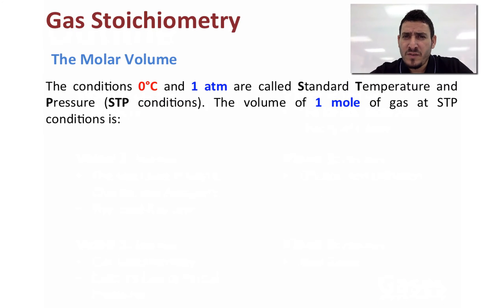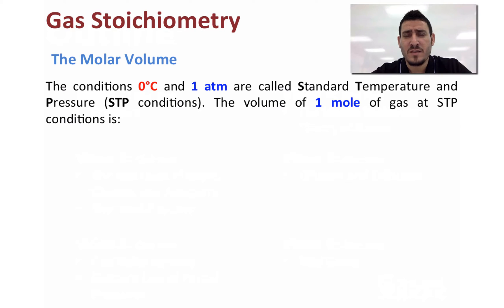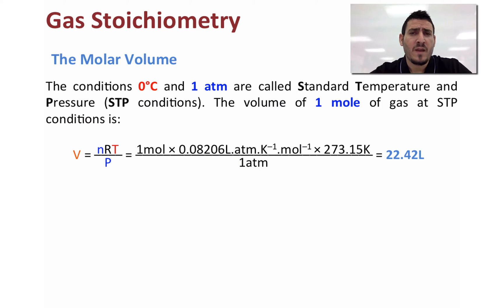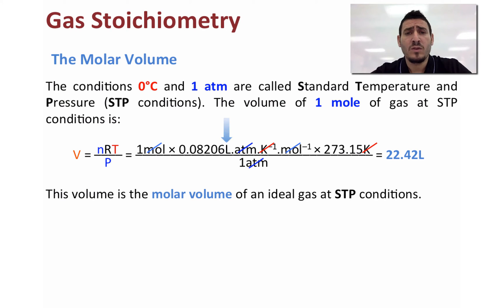In a previous video I discussed the ideal gas law. Using this law we can calculate the molar volume at standard conditions of temperature and pressure. STP states that temperature equals zero degrees Celsius or 273.15 Kelvin and pressure equals one atmosphere. Rearranging the ideal gas law to V = nRT/P and substituting these values, we get a volume of 22.42 liters — the molar volume at STP.